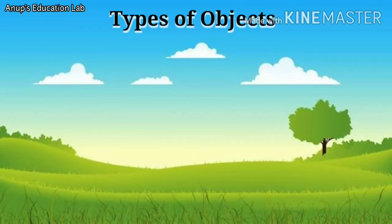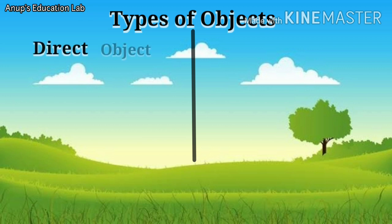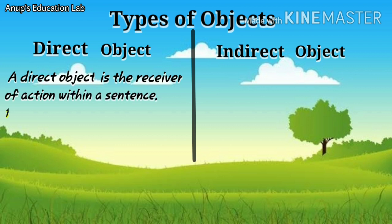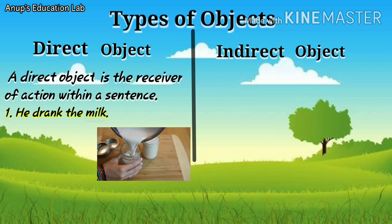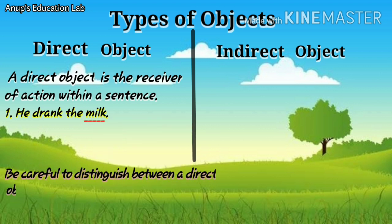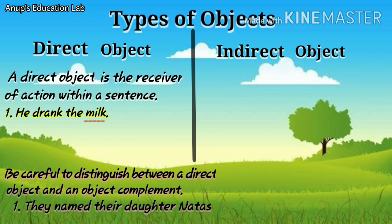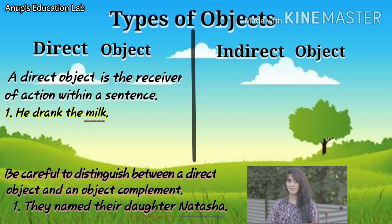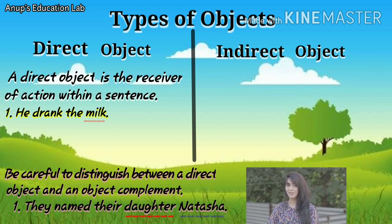Now, there are two types of objects. They are direct object and indirect object. A direct object is the receiver of the action within a sentence. Let us see an example. He drank the milk. Here, milk is the direct object. But, be careful to distinguish between a direct object and an object complement. Let us take an example of object complement. They named their daughter Natasha. In this sentence, daughter is the direct object and Natasha is the object complement which describes the direct object.